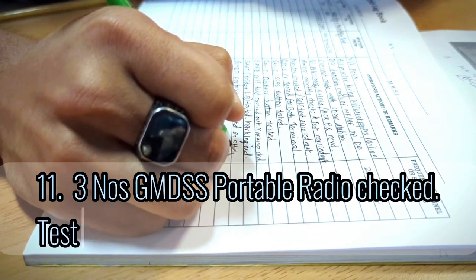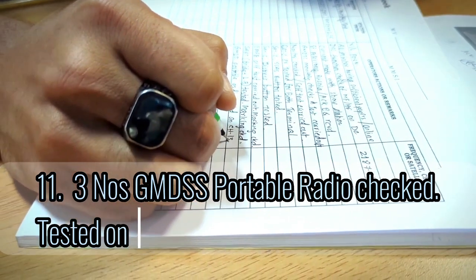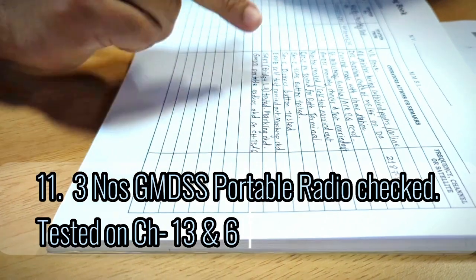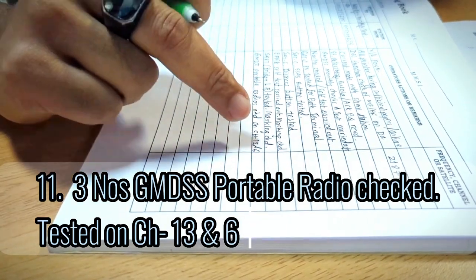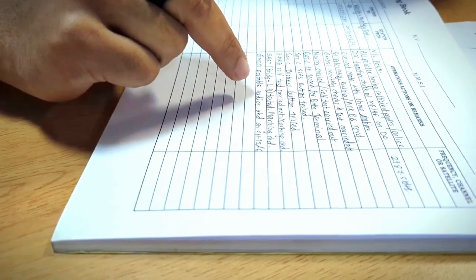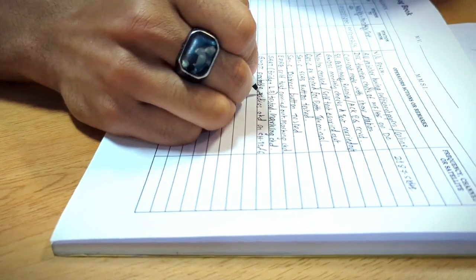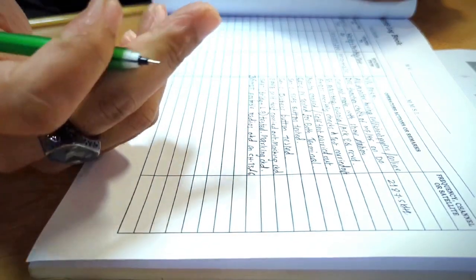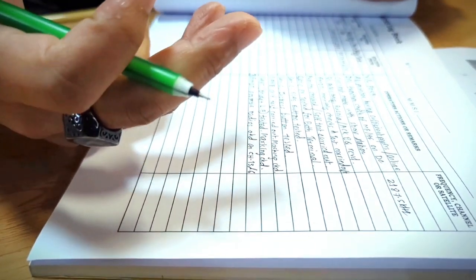And you never should test on channel 16 for GMDSS portable radio. This is also a requirement, you should not check it on channel 16. We have three on board, usually you also may have three.